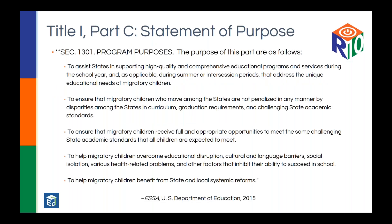Part C's statement of purpose says the purposes of this part are: to assist states in supporting high-quality and comprehensive educational programs during the school year and, as applicable, during summer or intercession periods that address the unique educational needs of migratory children; to ensure migratory children who move among states are not penalized by disparities in curriculum, graduation requirements, and challenging state academic standards; to ensure migratory children receive full and appropriate opportunities to meet the same challenging state academic standards all children are expected to meet; to help migratory children overcome educational disruption, cultural and language barriers, social isolation, health-related problems, and other factors inhibiting their ability to succeed in school; and to help migratory children benefit from state and local systemic reforms.